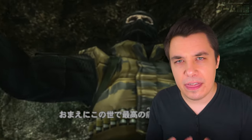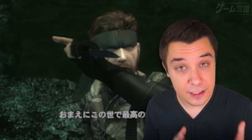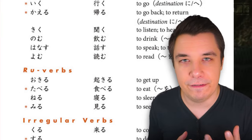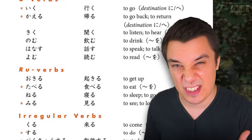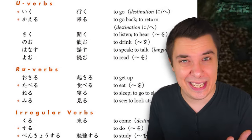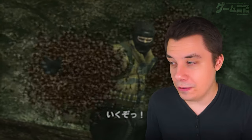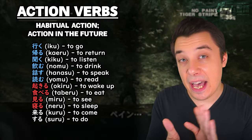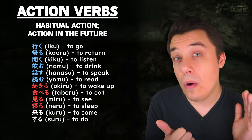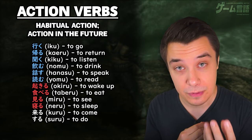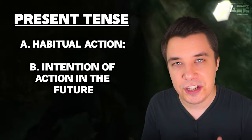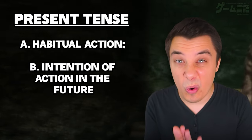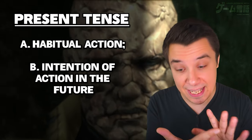The next thing we're going to learn in this lesson is the present tense conjugation. In this lesson you'll be learning about a dozen different verbs that describe basic human actions — things like watching, eating, drinking, going, returning. These are often called action verbs. When you use these action verbs, they refer to either habitually doing something or showing that you will do this action in the future — that's the present tense in Japanese.